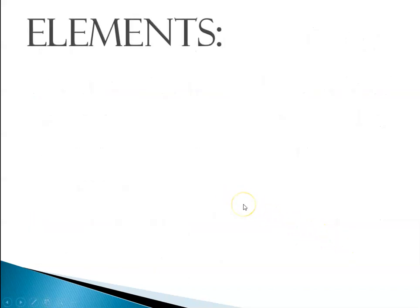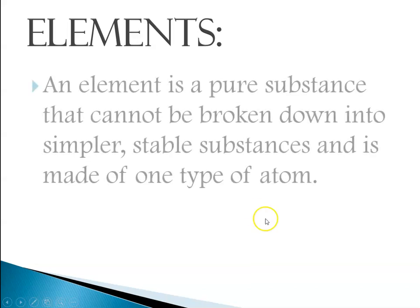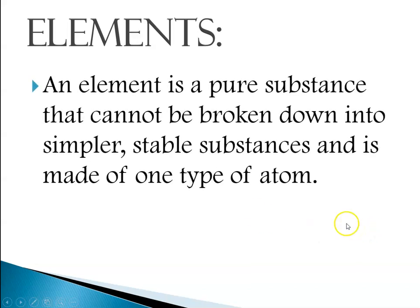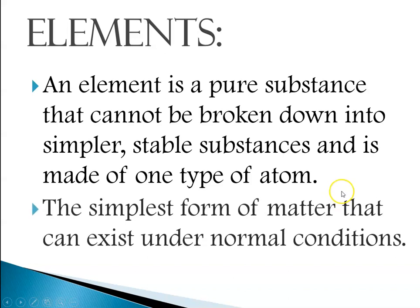So, that leads us to talking about elements. Elements are pure substances that cannot be broken down into simpler, stable substances and are made up of one type of atom — by normal means. The simplest form of an element is an atom, and elements are pure substances in their most stable state. They only consist of one type of atom, so it's the simplest form of matter that can exist under so-called normal conditions.